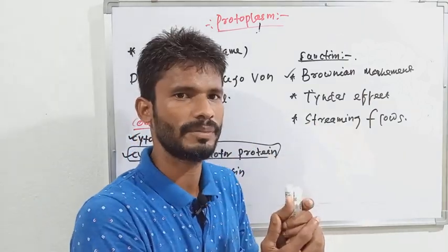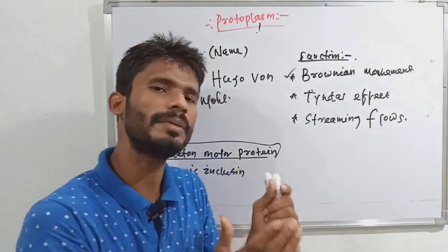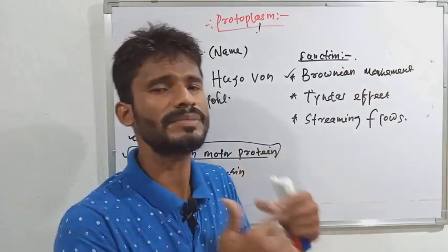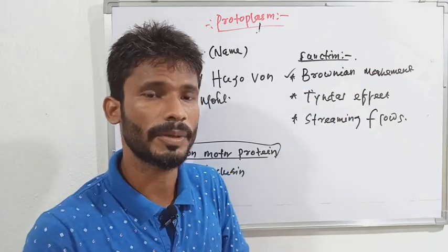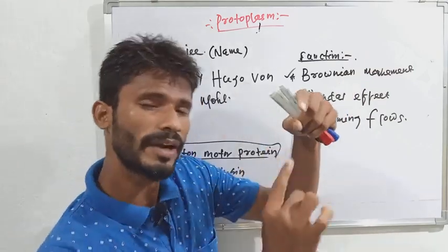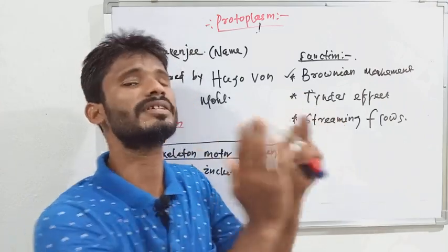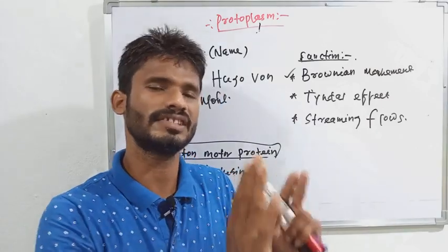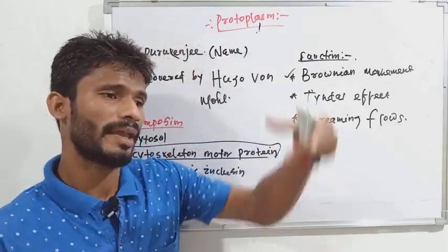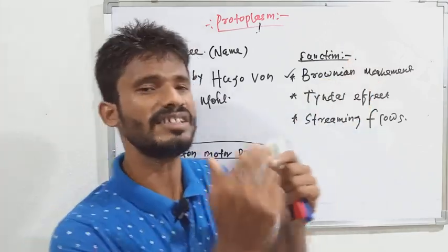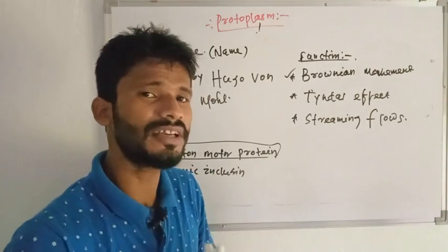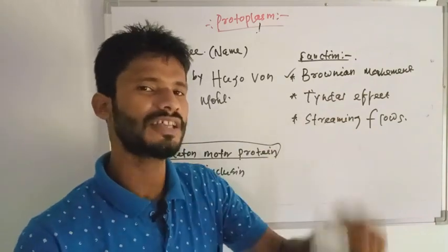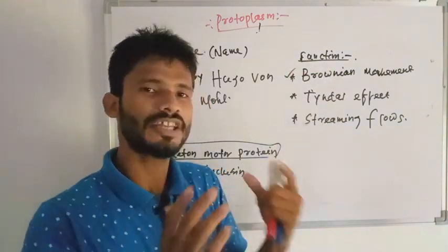For example, mitochondria is the energy house of the cell; the lysosome is the suicidal bag; the centriole performs cell division. Metabolism means all the chemical reactions which occur inside the cell. Glycolysis means the breakdown of glucose to produce energy. The protoplasm also exhibits Brownian movement, tidal effect, and streaming flow.